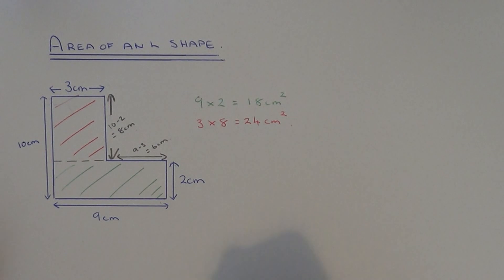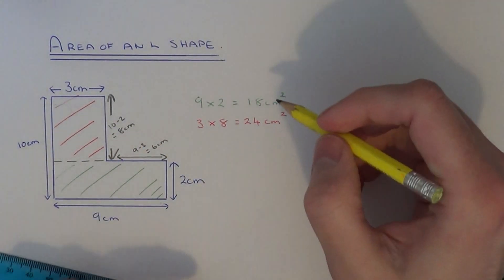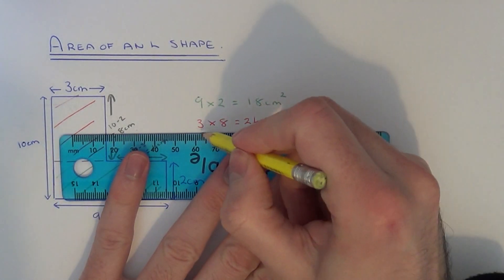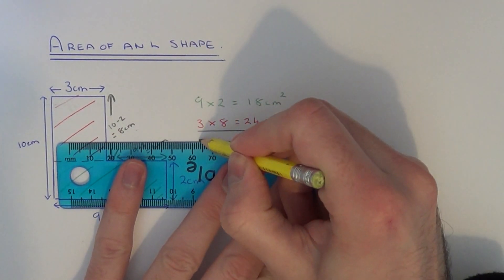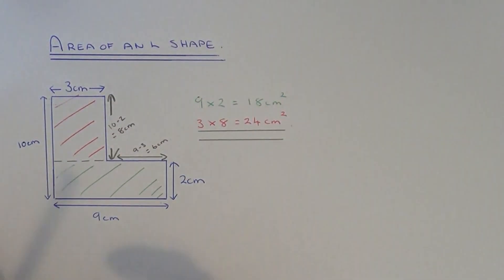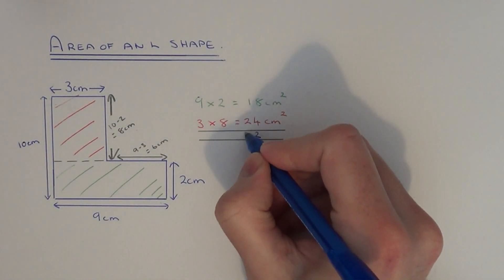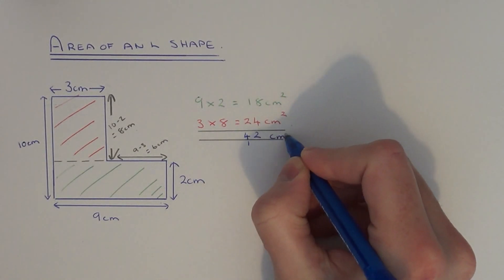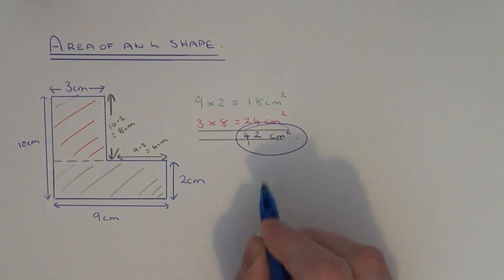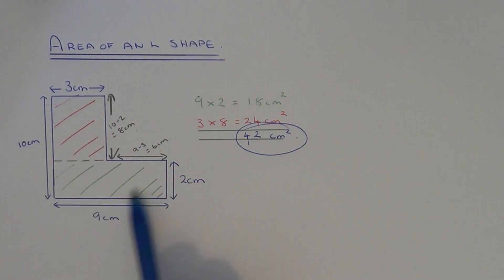Finally we just need to work out the total area of this L shape. You need to add together these two calculations. So twenty four add eighteen will give us forty two centimeters squared. So that is the area of this L shape.